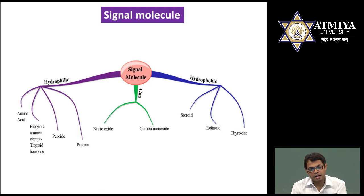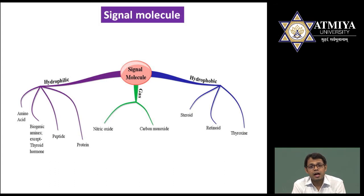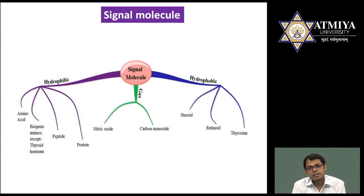These three — hydrophilic, gas, and hydrophobic — are categorized such that hydrophilic molecules bind to the cell surface receptor. Hydrophilic molecules are polar and cannot cross the lipid bilayer or the protein channels of the plasma membrane, since the membrane is made of lipids and specific proteins. Therefore, hydrophilic molecules cannot enter the cell and instead bind to receptors present on the cell surface — that is, plasma membrane receptors only.